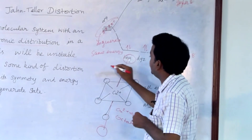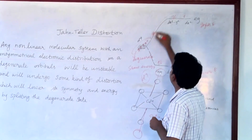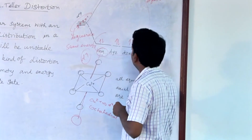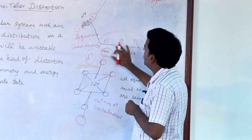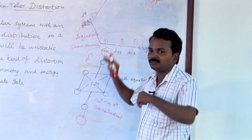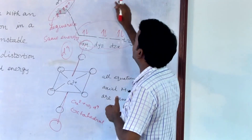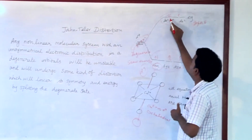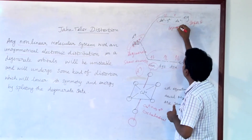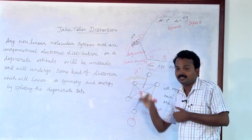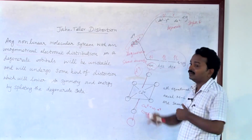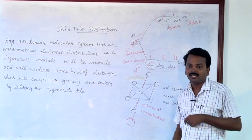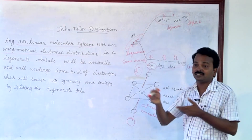Since we have a D9 system, we arrange 9 electrons. The lower T2G level has all 3 degenerate orbitals fully filled, so no problem there. Now in the higher energy EG level, these 2 levels are degenerate, and both orbitals are competing for the extra third electron because both are at the same energy level.